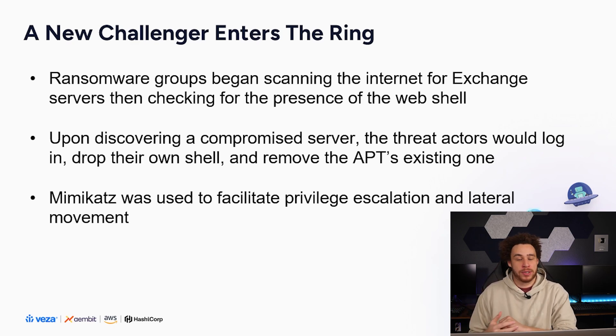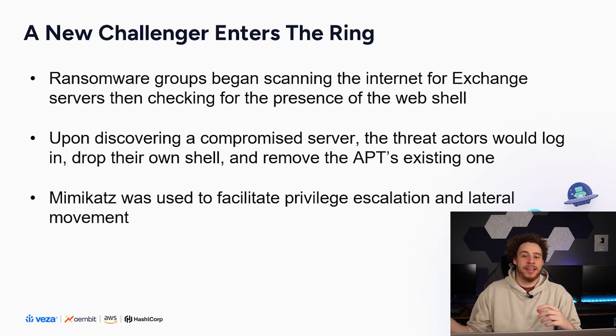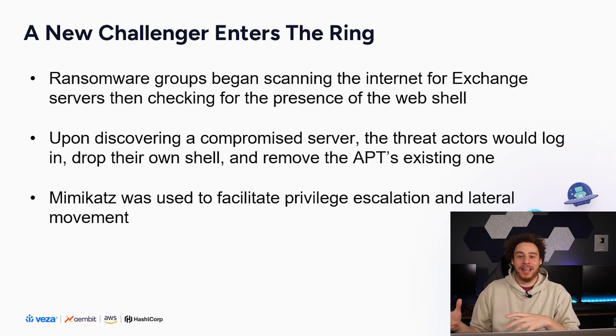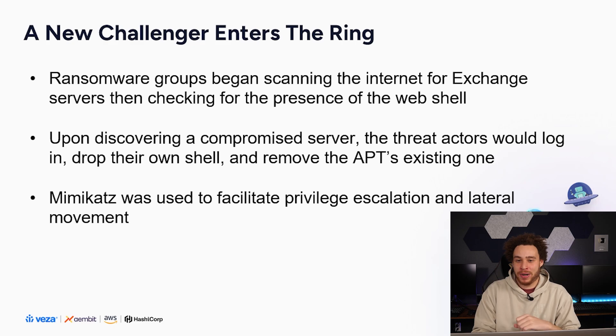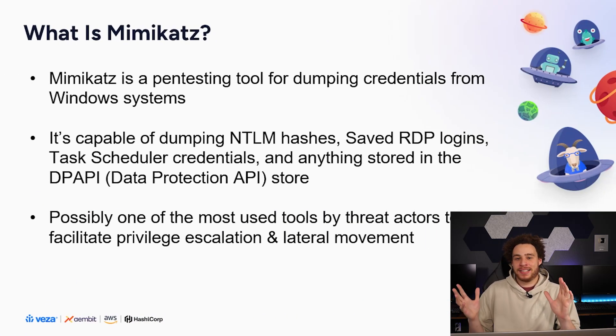A ransomware group — completely unassociated with the APT, completely different goals, financially motivated — scanned the entire internet for publicly accessible Exchange servers, looked for the shell path, and once they got in they would remove the APT shell, essentially locking the APT out and taking the access for themselves. They used Mimikatz for privilege escalation. This is your worst-case scenario for network security professionals: not only have you been compromised by a hostile nation-state APT, but they've left the back door unlocked and now there's a ransomware actor having a party in your network.